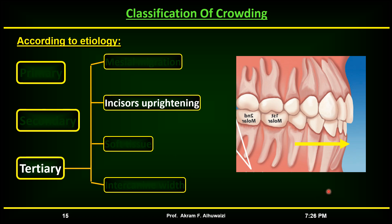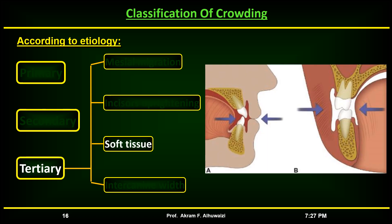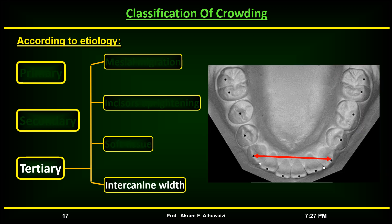Uprightening of the lower incisors as a result of forward growth of the mandible when maxillary growth has slowed may be a contributing factor. Soft tissue pressure being stronger from the lips and cheeks than from the tongue at this age can also contribute to crowding. Reduction in lower intercanine width is also a factor — in most individuals canine width increases to around 12 to 13 years of age, followed by a gradual reduction until late adulthood, mostly seen in the mid and late teens.